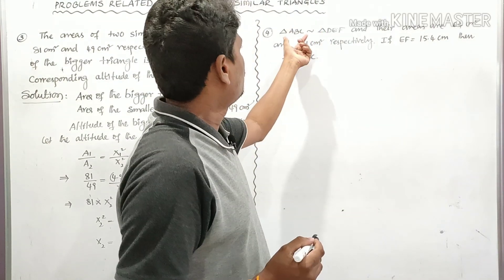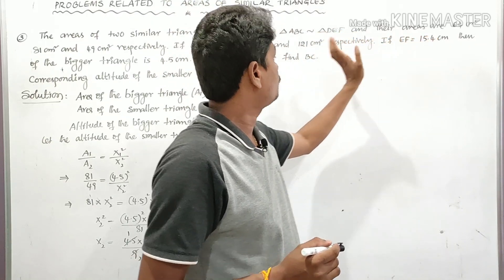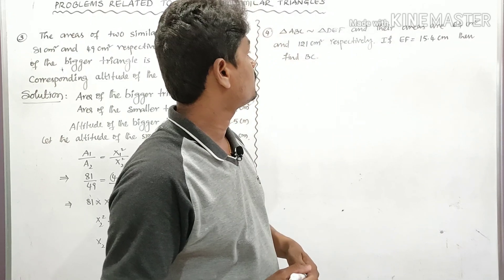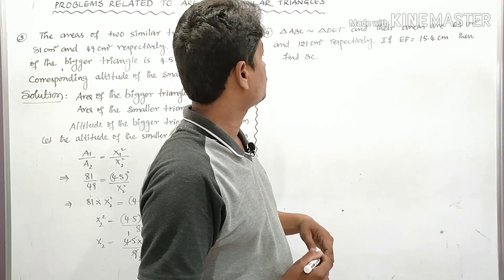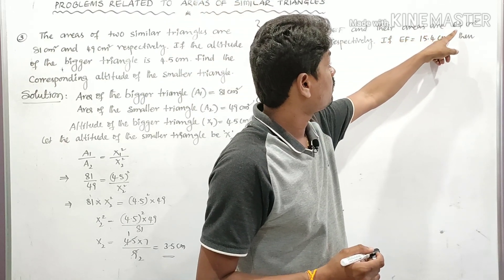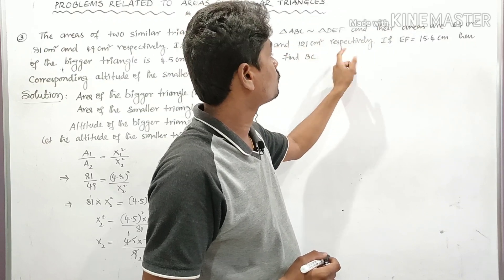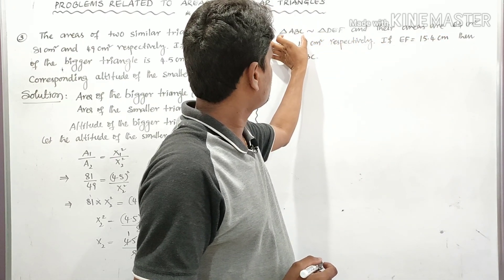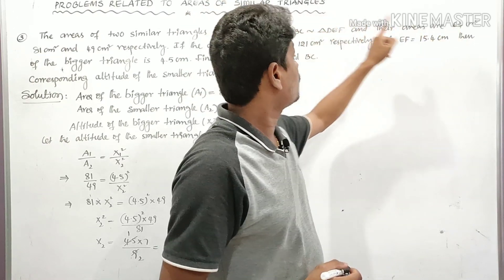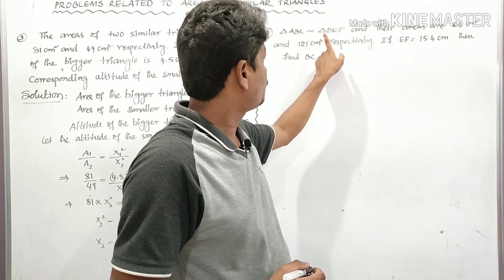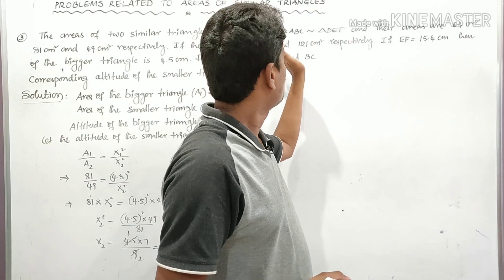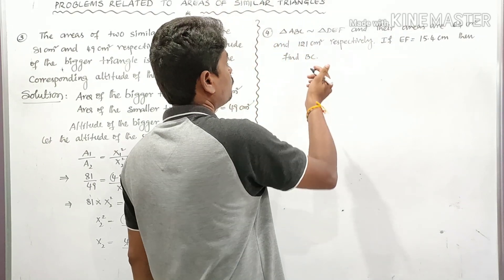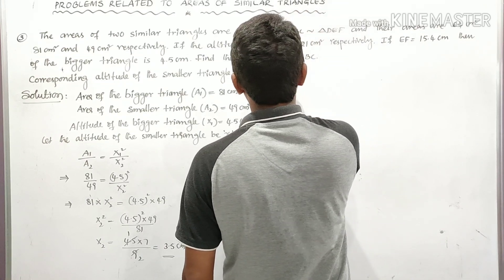Now for the fourth problem: Triangle ABC is similar to Triangle DEF, and their areas are 64 cm² and 121 cm² respectively. If EF = 15.4 centimeters, then find BC. So area of triangle ABC = 64 cm² and area of triangle DEF = 121 cm². We need to find BC given EF = 15.4 cm.